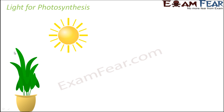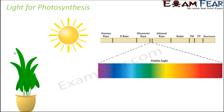Let us understand the significance of light for photosynthesis. When we say sunlight is important for photosynthesis, not every type of light coming from the sun is important — only a particular section is involved in the process of photosynthesis. Sunlight constitutes the electromagnetic spectrum, which includes gamma rays, X-rays, ultraviolet rays, and infrared rays.